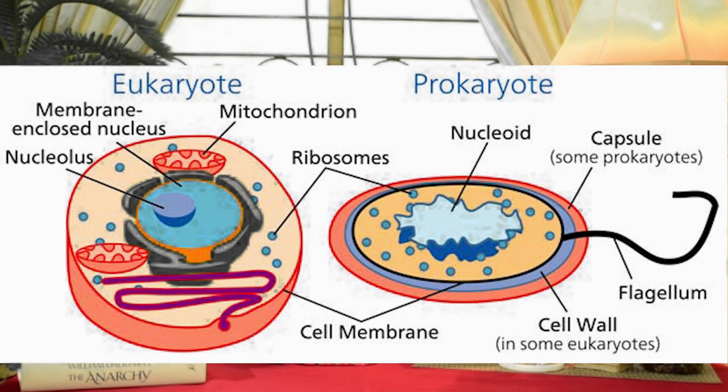Now we look at the nucleus. The nucleus is a structural and functional unit of the cell. Looking at the types of cells based on the nucleus, there are two types: prokaryotic and eukaryotic. Prokaryotic means primitive nucleus — 'karyo' refers to nucleus — and prokaryotic cells do not have a well-defined nucleus, like bacteria. Eukaryotic cells are organisms that have a well-defined nucleus, and their organelles and cell structures are very defined.